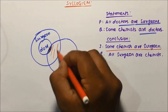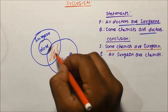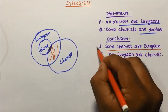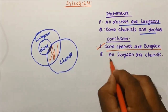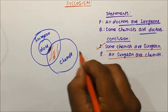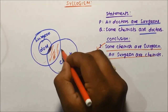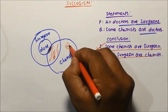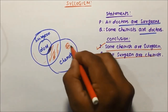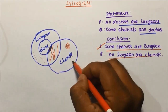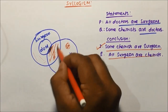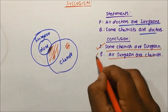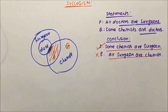Conclusion one: 'some chemists are surgeons' — since some chemists are doctors, and all doctors are surgeons, automatically some part of chemist will be surgeon, so conclusion one is true. Conclusion two: 'all surgeons are chemists' — all surgeons are not inside the chemist circle; only some part of surgeon is chemist, so conclusion two is false.